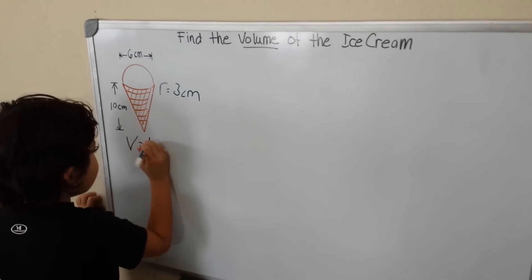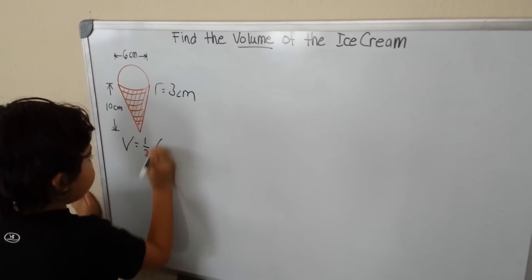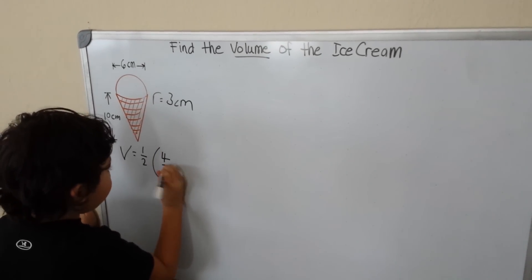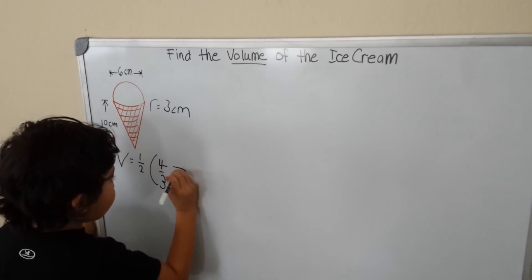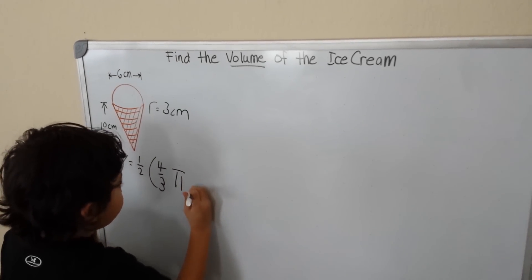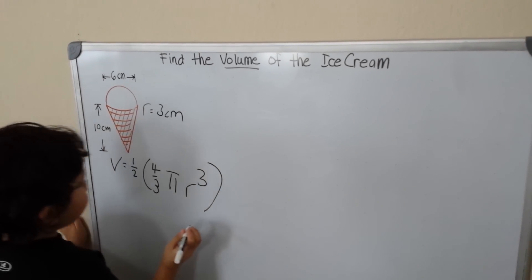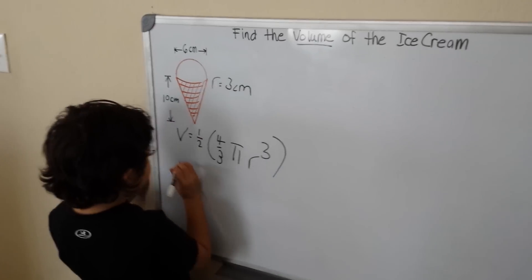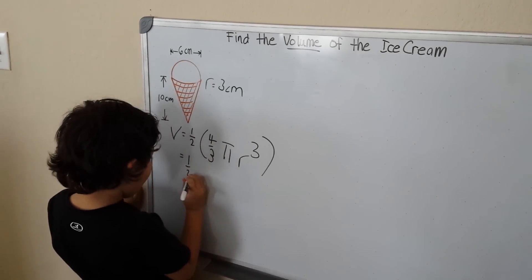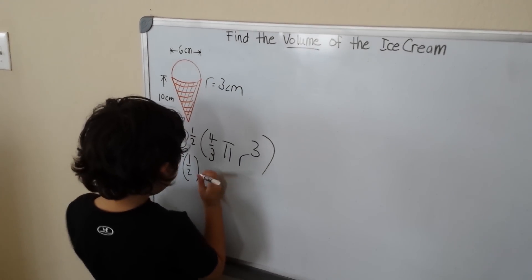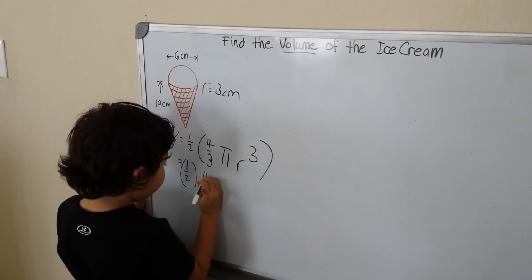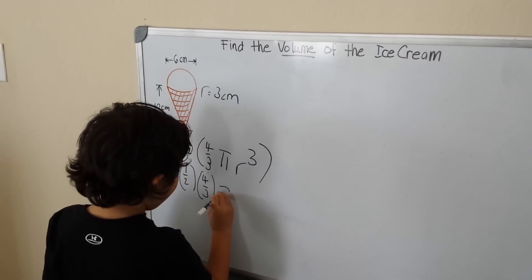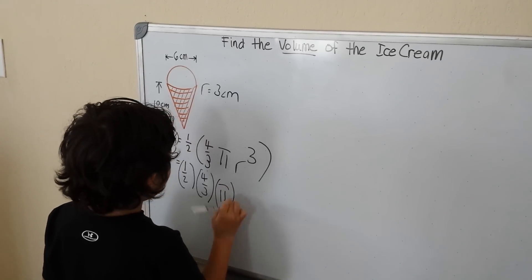The volume of the hemisphere is 1 and a half times the volume of a sphere. The formula is 4 over 3 times pi times the radius cubed. So we copy the 1 and a half, then 4 over 3, then pi, and then r cubed.